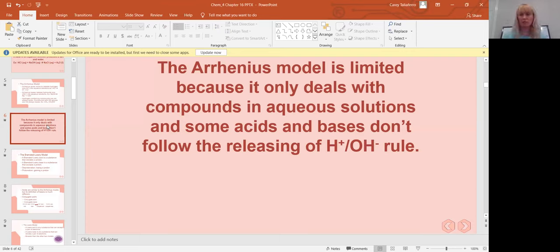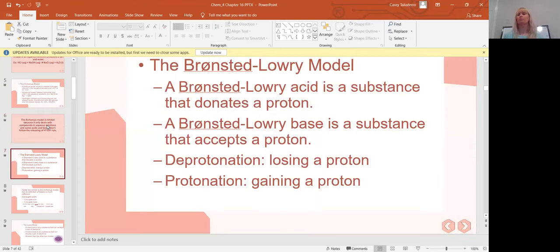So we had to go to a different, broader, more encompassing definition. That was with the Bronsted-Lowry model. These two guys were working on this together at the same time. They shifted the definition, and instead of releasing a hydrogen ion, an acid is a substance that releases a proton. A Bronsted-Lowry base is a substance that accepts a proton. We're not dealing with H+ and OH- anymore. We're dealing with proton donors, acids, and proton acceptors, which are bases. There are two terms for this: deprotonation is when you lose a proton, and protonation is when you gain a proton.